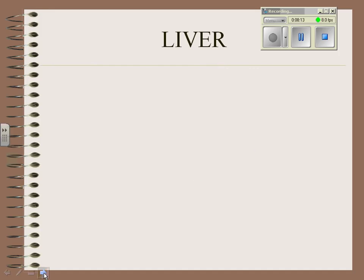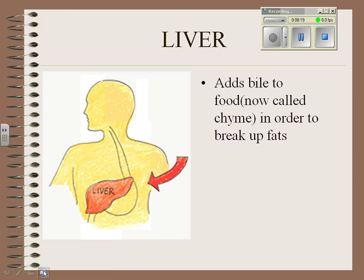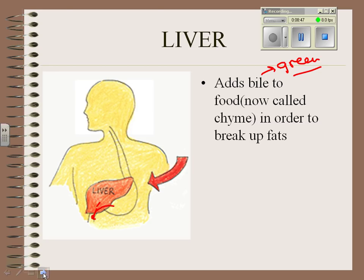As food passes into the small intestine, it passes by two organs. One is the liver. The liver adds something called bile to your food. Bile helps break up fat, and bile is green — you may have seen it if you've ever vomited a great deal and some contents from the beginning of your small intestine come out. So your liver's function in digestion is to add bile to break up fat, but notice that food doesn't actually go through your liver.